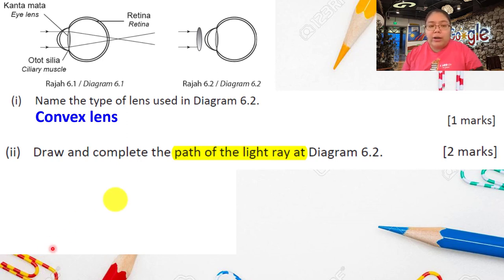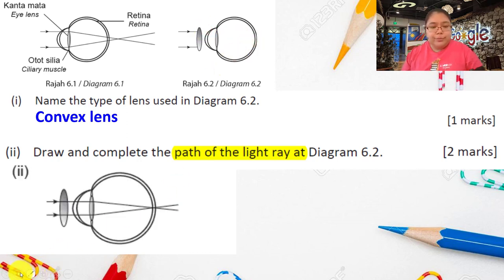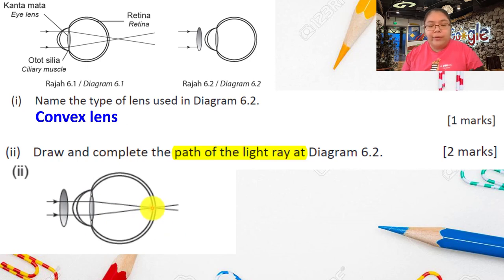Number two, you need to draw — continue the path of the light ray in diagram 6.2. You need to continue until the light reaches the retina. So when you draw later, you must focus at the retina. The light goes straight, passes through the lens in your eyes, then focuses to the retina. Both light rays will converge on the retina. Finally, when you add the convex lens, the hyperopia person can see the image.